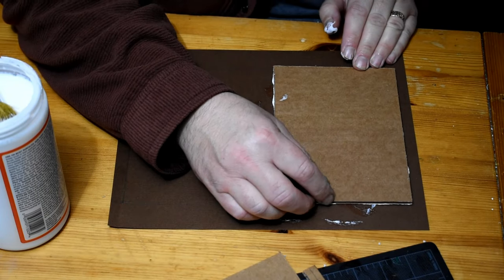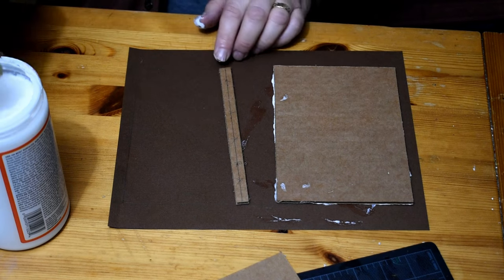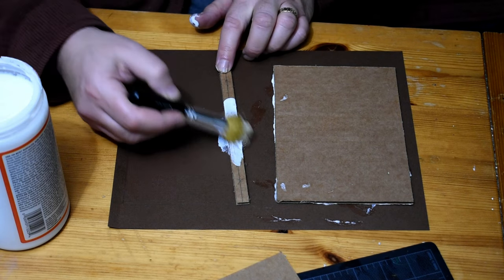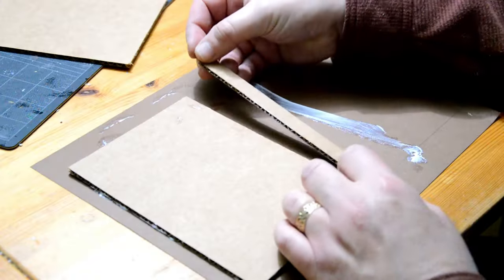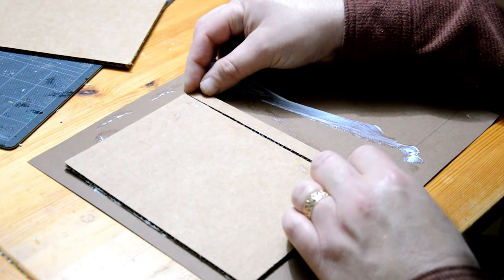It's kind of hard to see on camera, but I marked off the margins, and that will help me make sure that these cardboard pieces are aligned, and then I also have enough overlap to make the cover look nice and neat when I'm done.